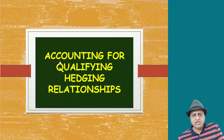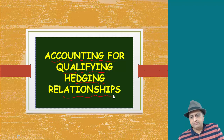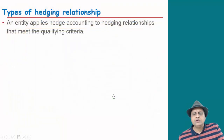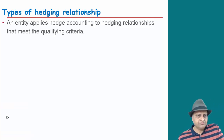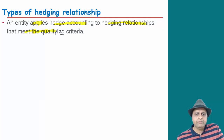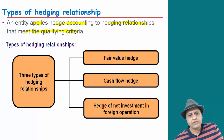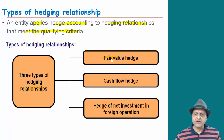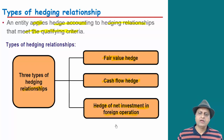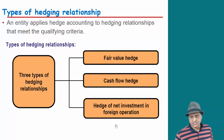This video is about accounting for qualifying hedging relationships. First of all, we will understand the types of hedging relationships. An entity applies hedge accounting to hedging relationships that meet certain criteria. There are three types of hedging relationship: fair value hedge, cash flow hedge, and hedge of net investment in foreign operations.